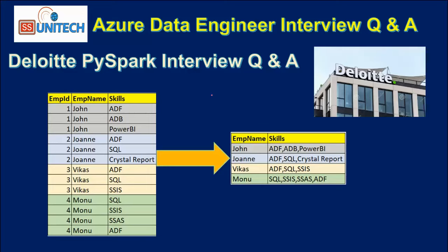Let's assume we have an input dataframe with employee ID, name, and skills. In the output we just want to see the skills as comma-separated values. For example, ID 1 is for John, who has three skills: ADF, Azure Databricks, and Power BI. So in the output we want to see ADF, Azure Databricks, Power BI all as a comma-separated value.